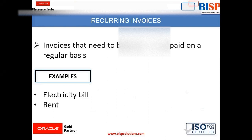For example, electricity bill, rent — for these invoices need to be generated on a regular basis. So by using the recurring invoice functionality available in Oracle Fusion, we can create an invoice just once by linking a general purpose calendar and defining the from and to period of the calendar for which the invoices are to be generated.